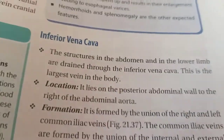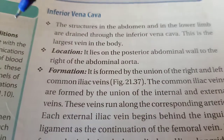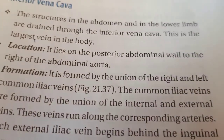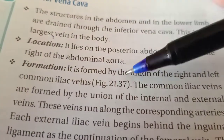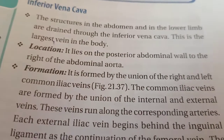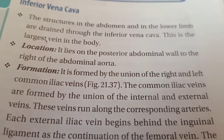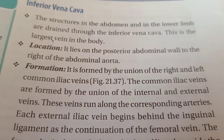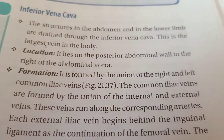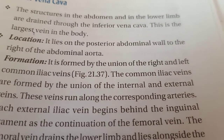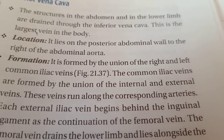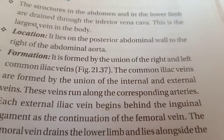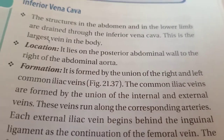Now what is the location of the inferior vena cava? This inferior vena cava lies on the posterior abdominal wall to the right of the abdominal aorta. That means if you are standing in the anatomical position, the inferior vena cava would be on the right side of the abdominal aorta. The descending aorta is more towards the left side, so IVC is on the right side.